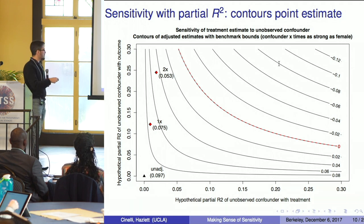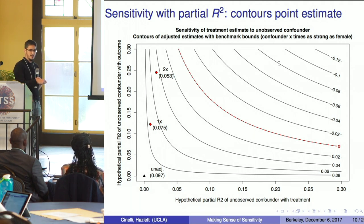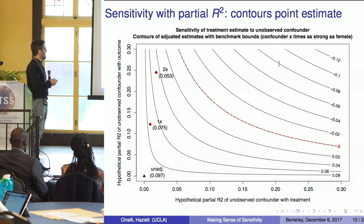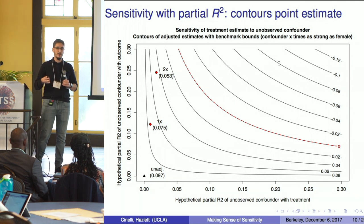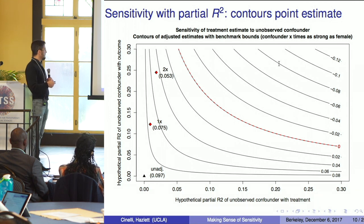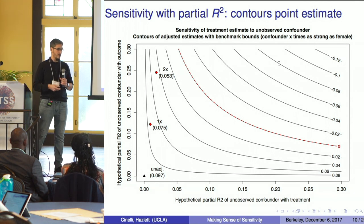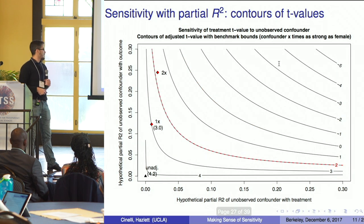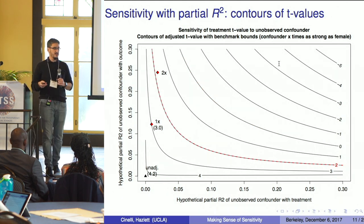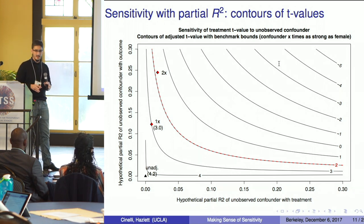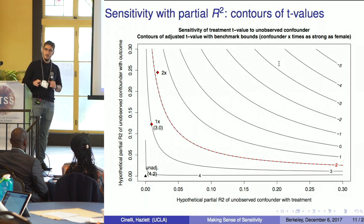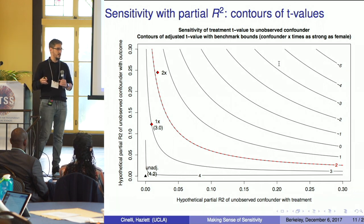I put two bounds on the plot: first, how strong a confounder as strong as female would be; second, how strong a confounder twice as strong as female would be. In that case you'd still be somewhat safe — your estimate would be cut in half but still away from zero. But that shows only the sensitivity of point estimates. What happens to statistical significance? That's trickier.